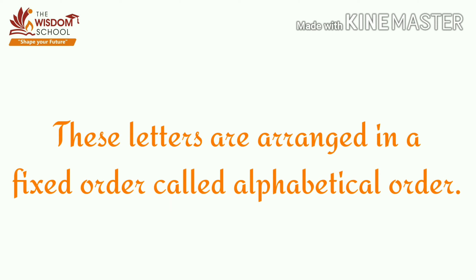All letters are arranged in a fixed order, which is called alphabetical order. We cannot change the sequence of the letters. For example, A comes first, then B — we cannot write B before A. These letters are always written in a fixed order, and this is called alphabetical order.